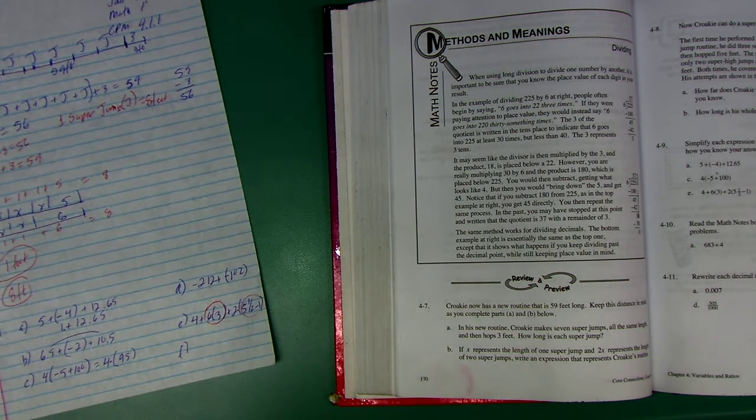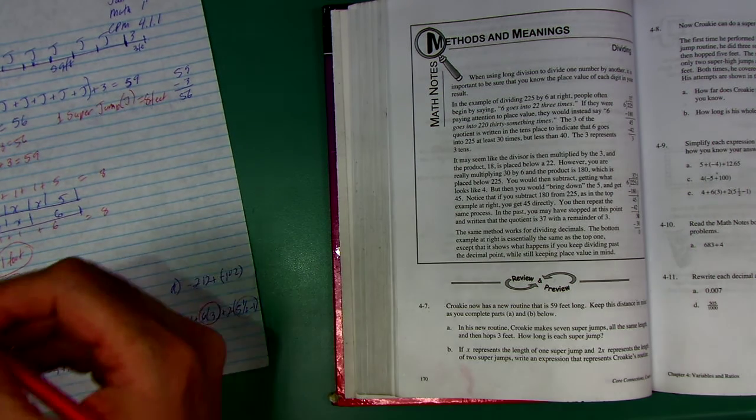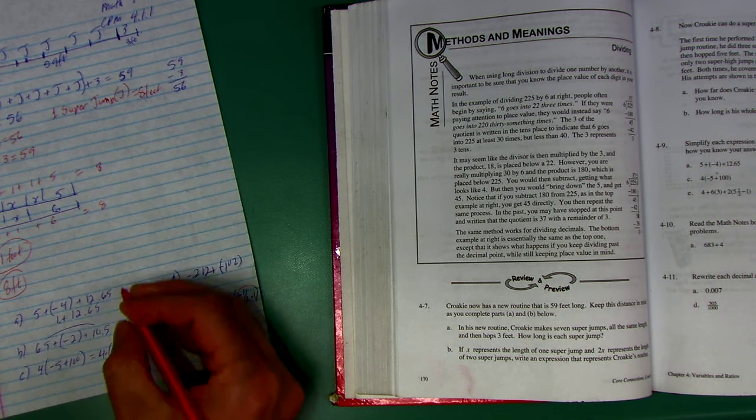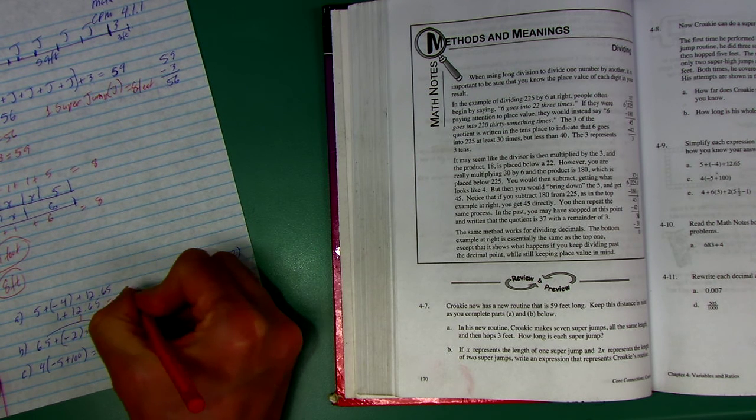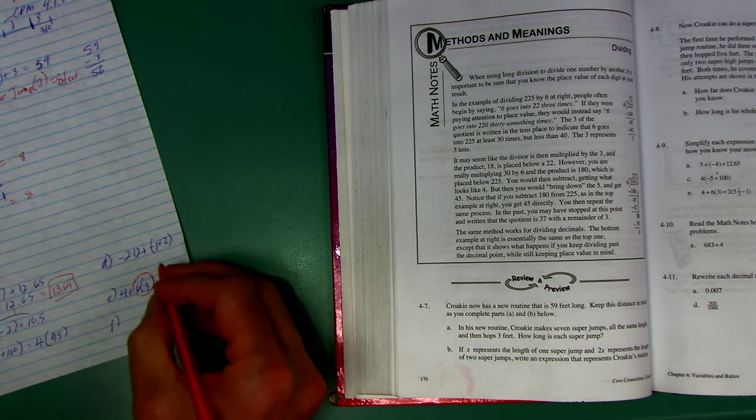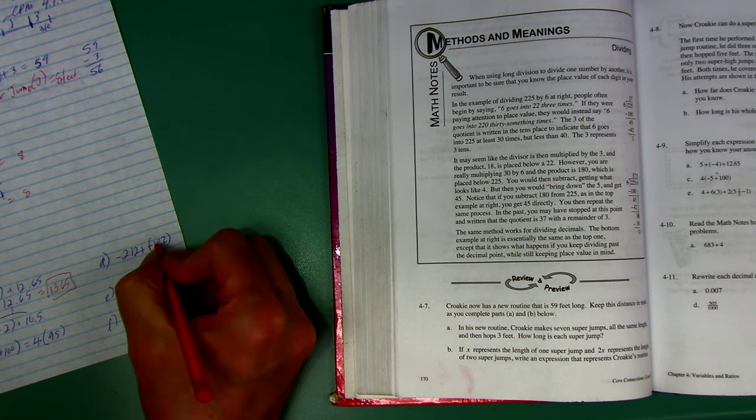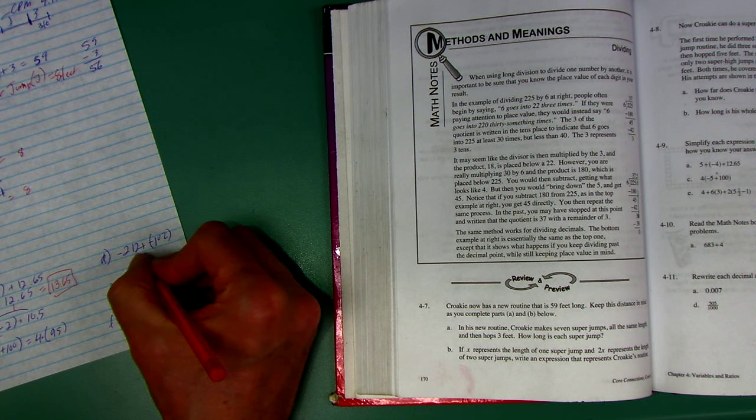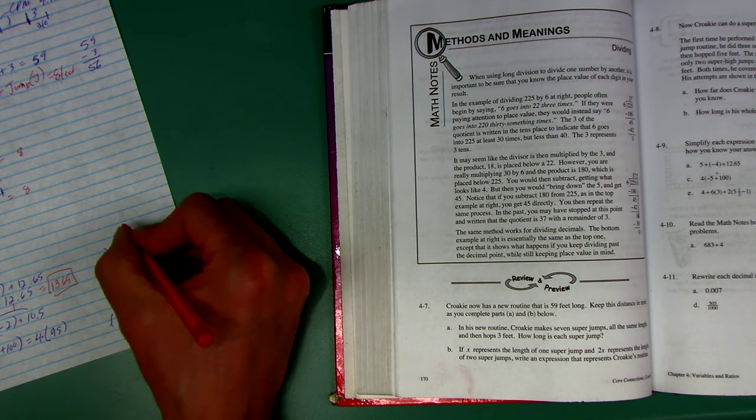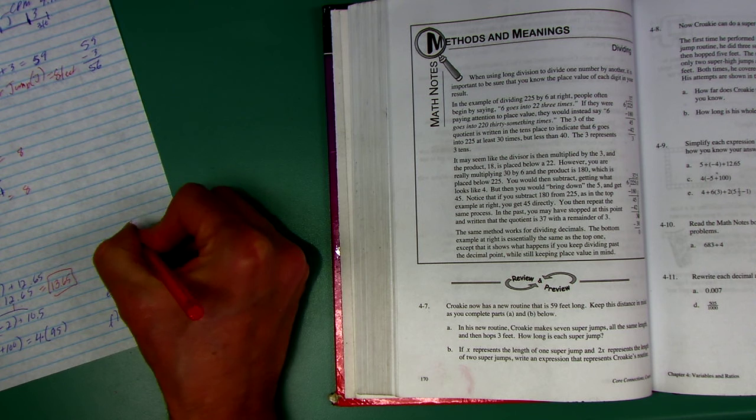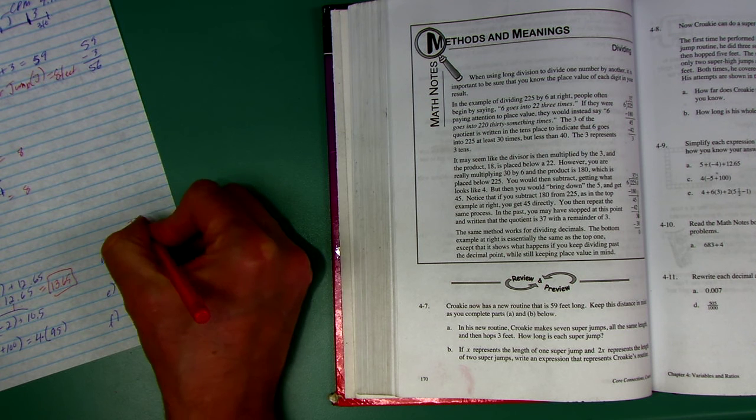Simplify. We already decided one plus 12.65, that ends up being 13.65. I've got 212 minus 102, or 212 plus negative 212, that's going to be negative a total of 314 on D.